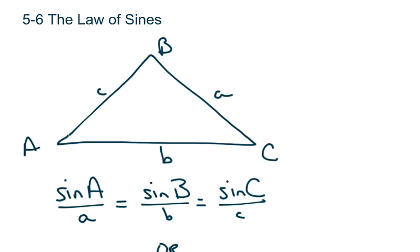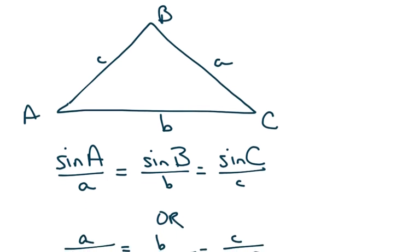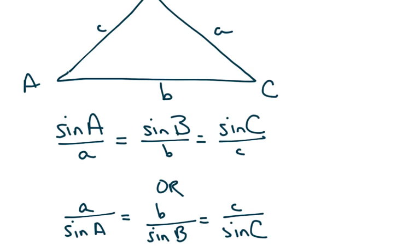If you have a triangle ABC whose side lengths are also A, B, C — the side opposite angle A is side A, the side opposite angle B is side B, and the side opposite angle C is side C — the law of sines says that if you make a proportion out of ratios from the sine of an angle over its corresponding side, they will all be equivalent. In other words, sine of angle A over side A equals sine of angle B over side B equals sine of angle C over side C.